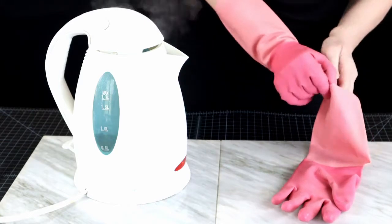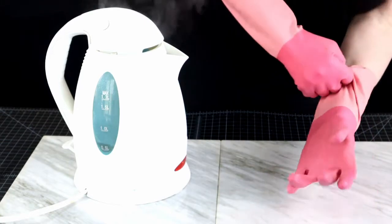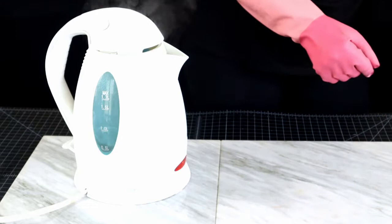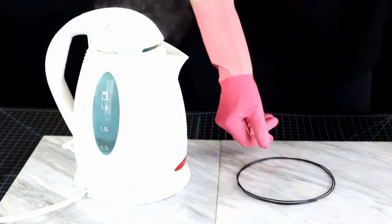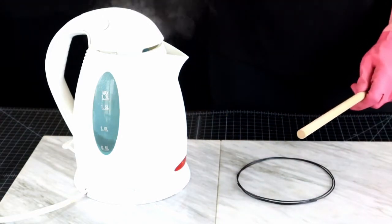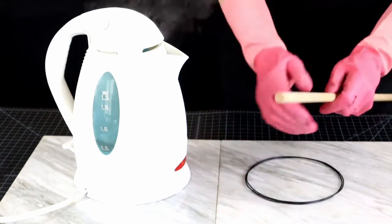You will need a water boiling kettle, rubber gloves, obviously the filament, and a rod of the diameter you want your jump rings to be.